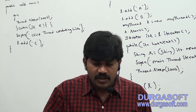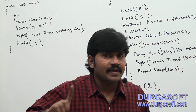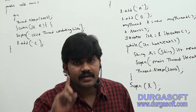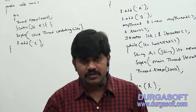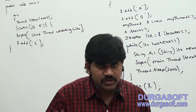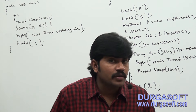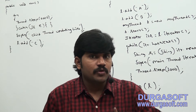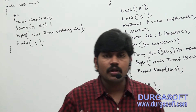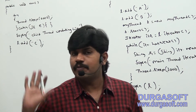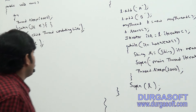But if it is a normal ArrayList, while one thread is iterating, the other thread is not allowed to modify the list object. If the other thread tries to modify, we will get a ConcurrentModificationException. To demonstrate that point, let me go through this example. Observe it carefully.